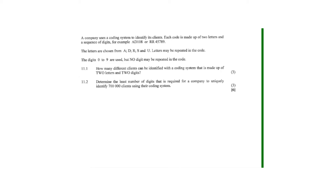This question is from November 2017 on counting principles. A company uses a coding system to identify its clients. The code is made up of two letters and a sequence of digits — for example, two letters and three digits, or two letters and five digits. The letters are chosen from A, D, R, S, and U, which gives five options, and letters may be repeated in the code.